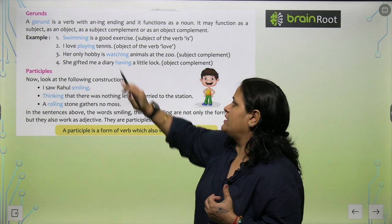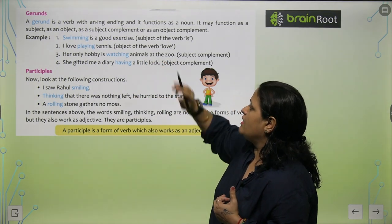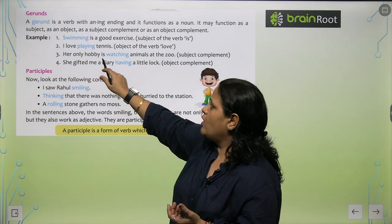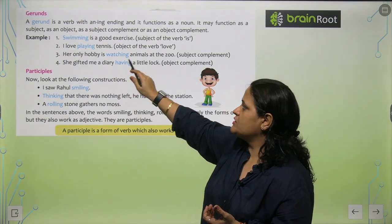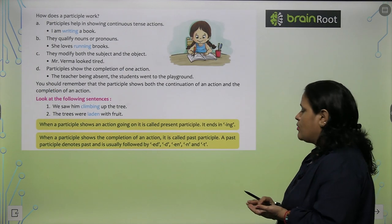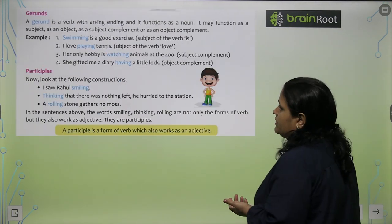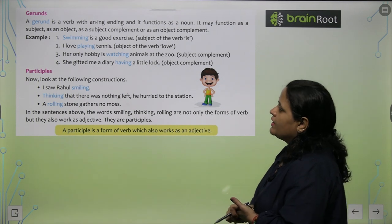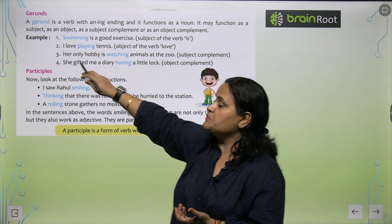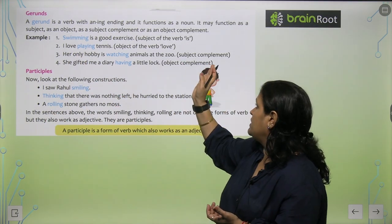I love playing tennis - object of the verb love. So her only hobby is watching animals at the zoo. Here, it's a subject complement.